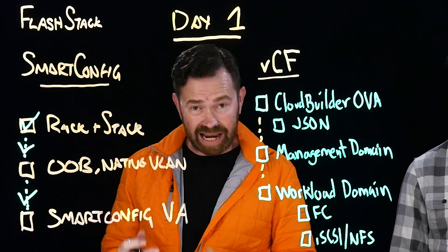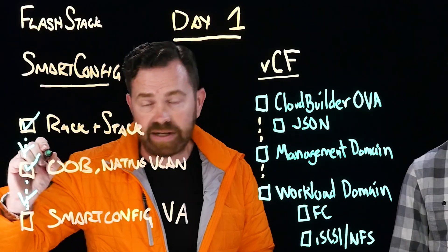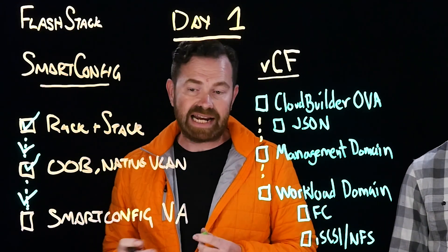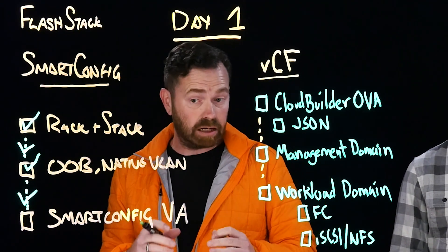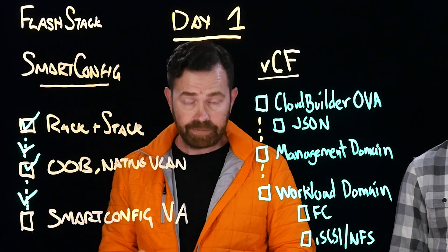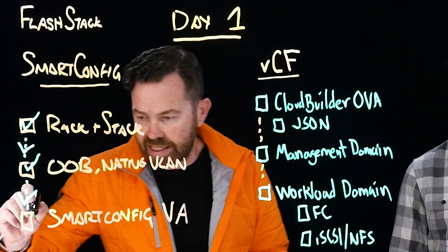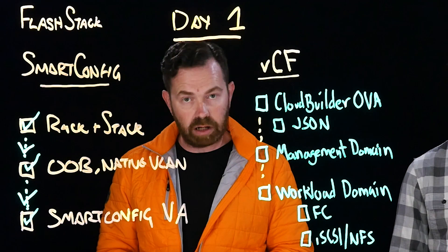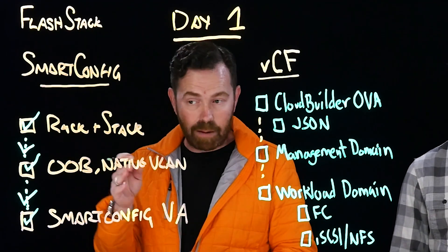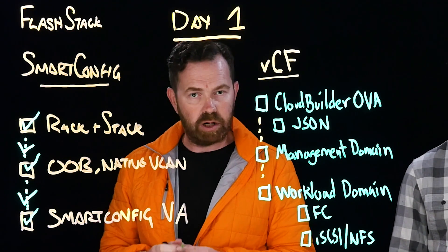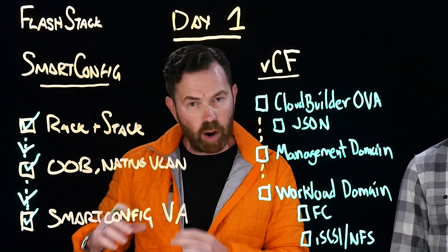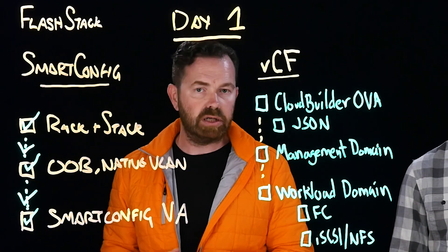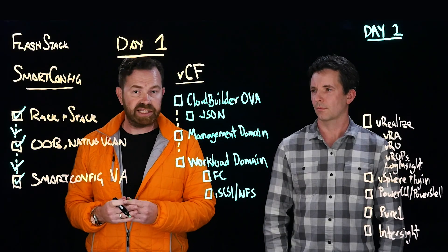Next, we take the out-of-band management devices from each of the devices and connect them up into a native VLAN on a standalone switch. The third phase is to deploy the Smart Config virtual appliance, which will use the out-of-band management network to go and discover all the components that make up FlashStack — the compute, network, and storage parts of that discovery process.